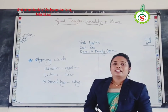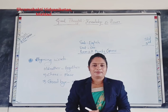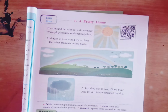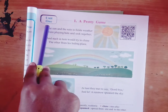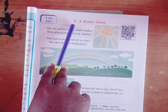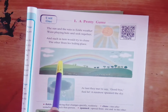Now you open your English textbook. Open page number 1, unit number 1, poem number 1 — "A Pretty Game." Now, see the poem.